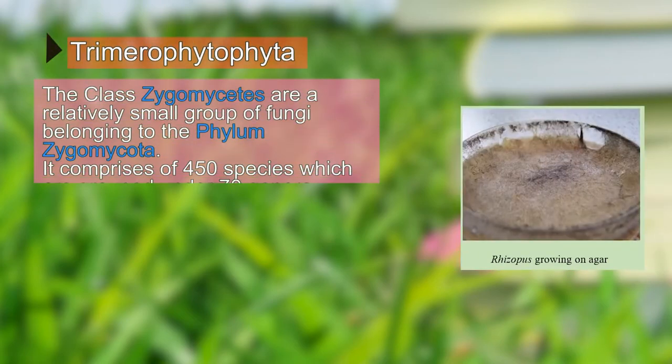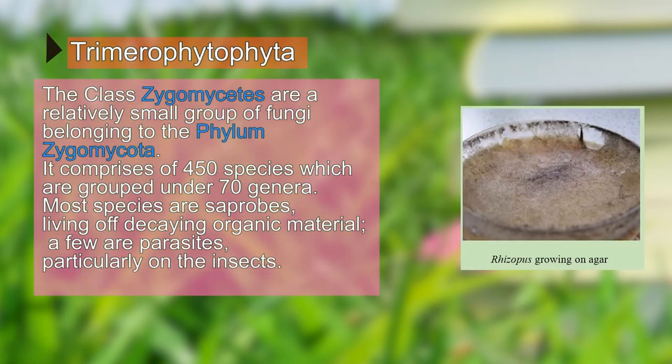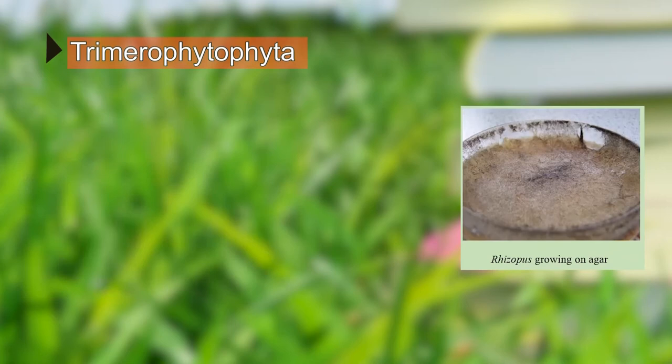The class Zygomycetes is a relatively small group of fungi which belongs to the phylum Zygomycota. It comprises 450 species which are grouped under 70 genera, and one of those genera is Rhizopus.